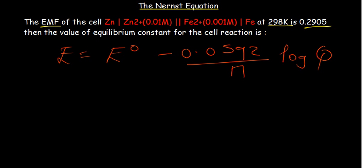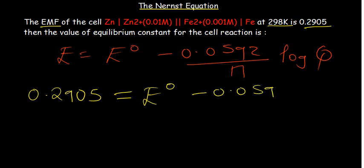Going back to our equation, our non-standard cell potential has been given to be 0.2905 equal to our standard cell potential, which is what we are trying to find. The number of electrons: oxidation was from zinc to that, reduction was from ion to ion. I am sure you are able to tell that the difference is two electrons being lost, two electrons being gained. So we will say over 2, and then now log Q.